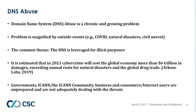One of the largest topics of ICANN 70 was DNS abuse. We've seen this now for the last three to five meetings — DNS abuse is really the hot topic. It is a chronic and growing problem. Outside events like COVID, natural disasters, and civil unrest really amp things up, as bad actors see an opportunity in those kinds of events. The common theme is that the DNS — the domain name system — is leveraged for illicit purposes. It's cheap, easy, and anonymous — the perfect storm for bad guys: low cost, low effort, big harm.